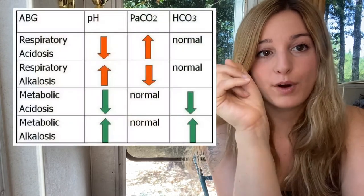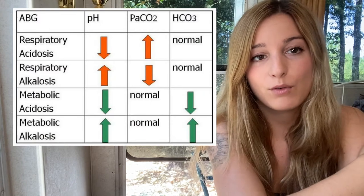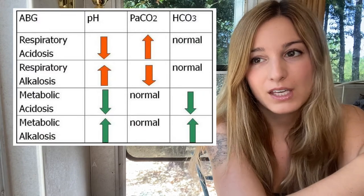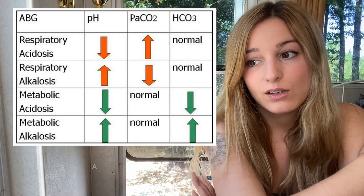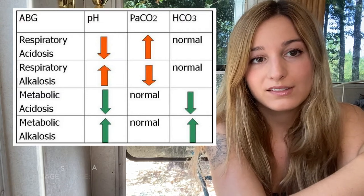We have four general categories when it comes to pH balance in the body and diagnoses: respiratory acidosis, respiratory alkalosis, metabolic acidosis, and metabolic alkalosis. I will put a chart right here and it will remain on screen for a lot of the video — when it comes to taking your exam, I want you to write this down. You can generally ask for a piece of scratch paper.